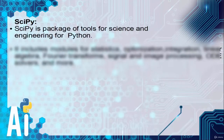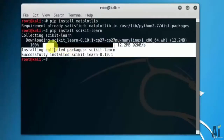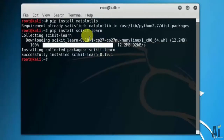Scipy is a package of tools for science and engineering for Python. It includes modules for statistics, optimization, integration, linear algebra, Fourier transforms, signal and image processing, ODE solvers, and more. Use the command pip install scipy.